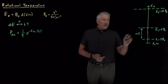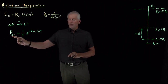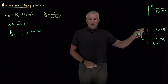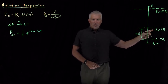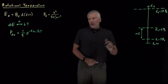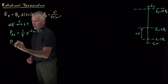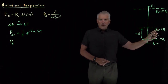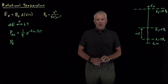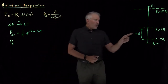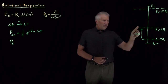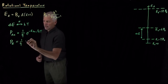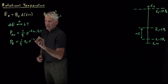Since we know these states are degenerate, the formula written here gives the probability of occupying a particular state — for example the L=2, M=−1 state or the L=2, M=+1 state — any individual state. More interesting is the probability of occupying an entire energy level. The probability of the entire energy level equals the probability for an individual state multiplied by the degeneracy of that energy level.